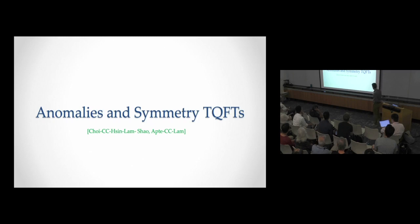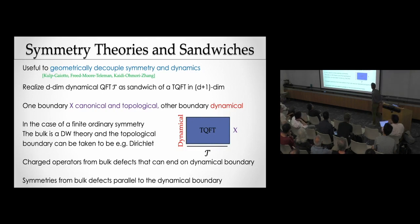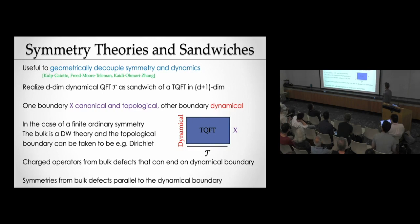Anomalies and symmetry TQFTs — this is where the new work begins. What's the formalism? If you want to study anomalies you need some generalization of anomaly inflow, this bulk-boundary correspondence. That generalization for non-invertible symmetries sometimes goes under the name of symmetry topological field theories — there are also terms like sandwiches, quiche, and even tartine. A sandwich is good enough: we're going to geometrically decouple the symmetry and the dynamics.